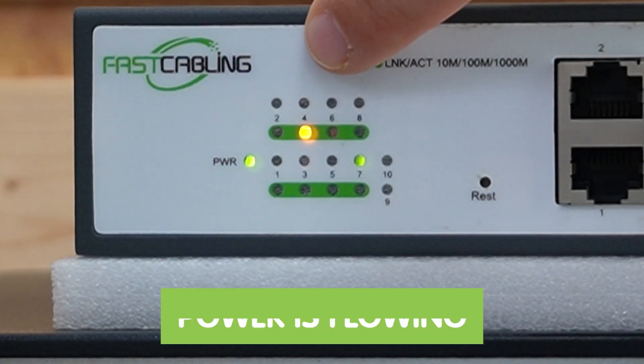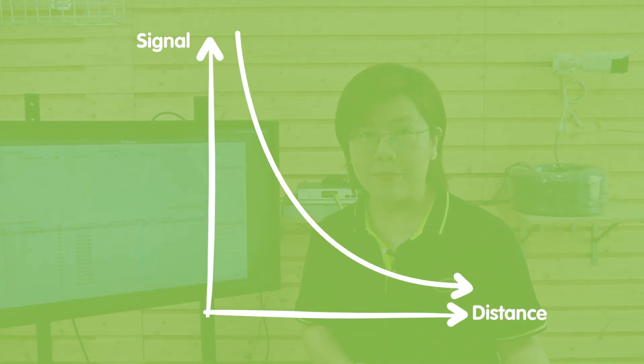See this — power is flowing, but the data light is dark. The camera is like: I'm alive but lonely. Power is like a tank; it will crawl 600ft if it has to. But data is like a whisper. Past 328ft, the Ethernet signal fades into the void. The 328ft limit isn't about power — it's about data.